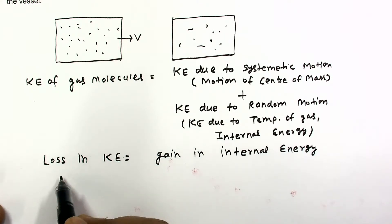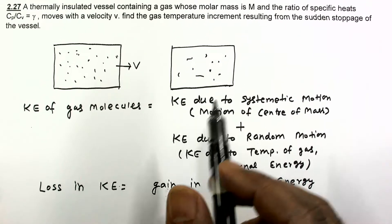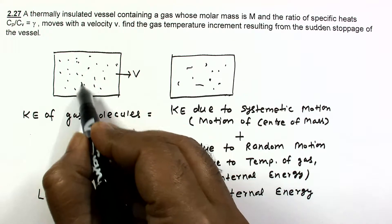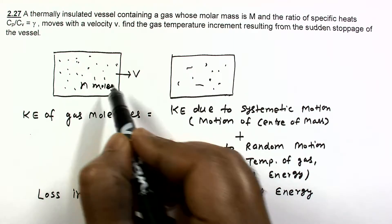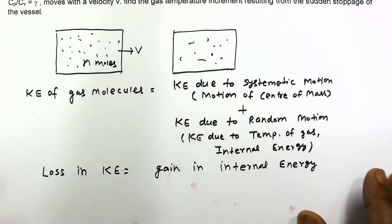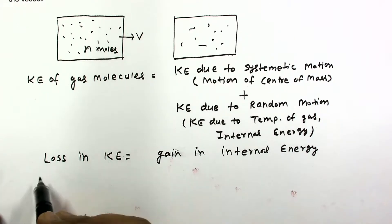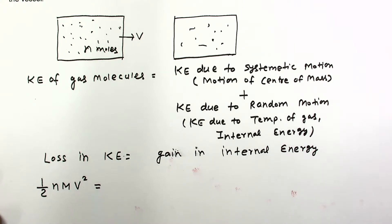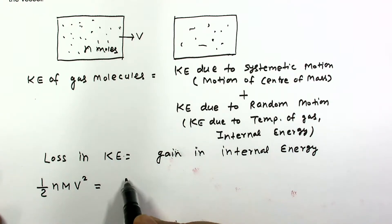And this loss of kinetic energy is equal to, since we are given that the molar mass is capital M, suppose there are N moles of gas. So total mass of gas will be N into M. So it will be half NM into V square. This is equal to gain in internal energy that can be written as delta U.